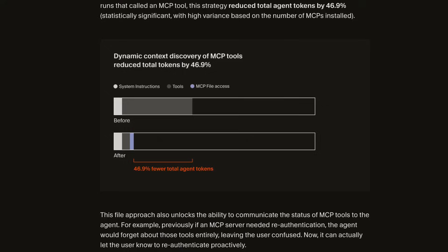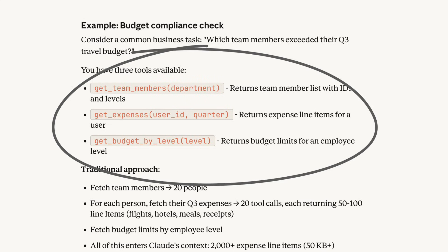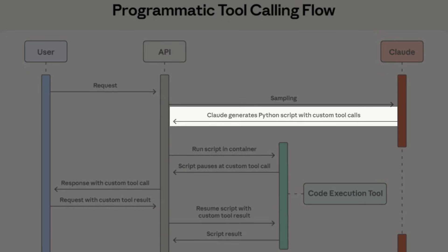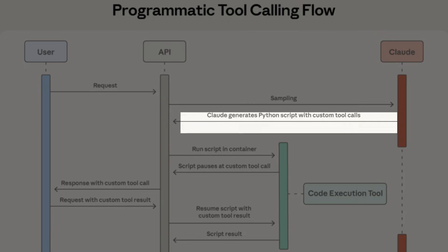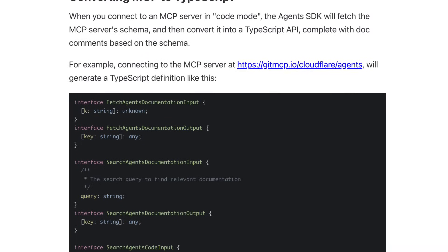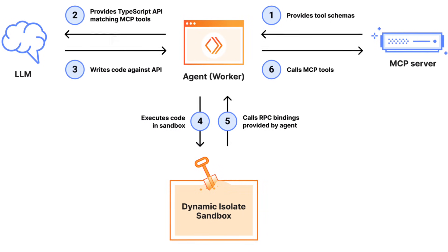Both Anthropic and Cursor have seen great benefits when it comes to using this approach for MCP tools. The programmatic approach works by models orchestrating tools through code instead of making API calls. So for tools that need to work one after the other based on the previous response, instead of making individual API tool calls, Claude can write a Python script to do all of this orchestration, then execute the code and present the result back to the model. Cloudflare have taken this one step further by getting the model to write TypeScript definitions for all the available tools and then running the code in a sandbox, which is usually a worker.